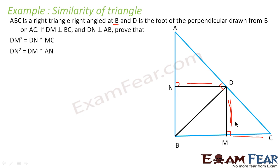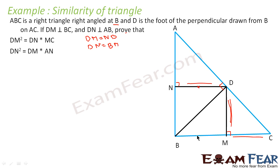Now since BNDM forms a parallelogram — all angles are 90 degrees — we know that DM is equal to NB. Both are the same. Also, DN will be equal to BM. This side equals this side and this side equals this side. So instead of DM, I can substitute NB, and instead of DN I can use BM.